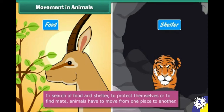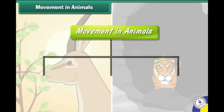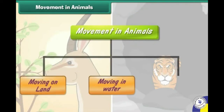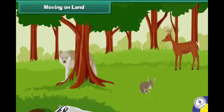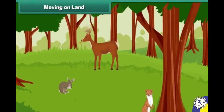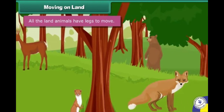Movement in animals: in search of food and shelter, to protect themselves, or to find a mate, animals have to move from one place to another. There are three different types of movement: moving on land, moving in water, and moving in air. All land animals have legs to move.